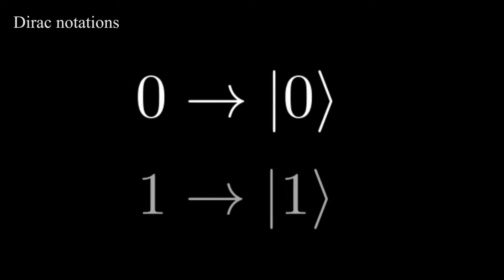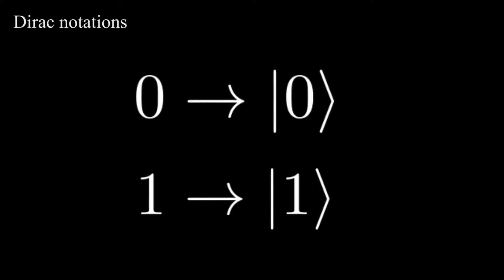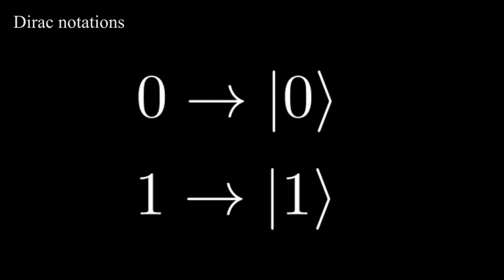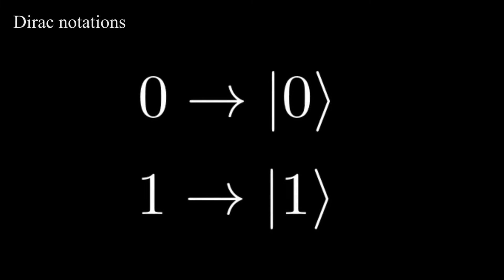The funny vertical bar and angle bracket that we place around the bit values are called Dirac notation. We can encode a classical bit into a qubit with the following mapping. So far, nothing in our description distinguishes a classical bit from a qubit, except for the funny notations.